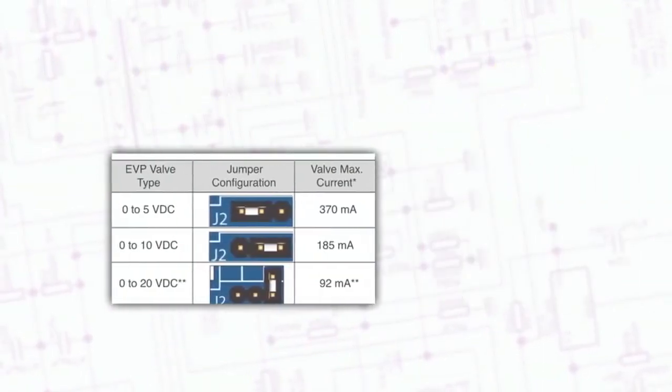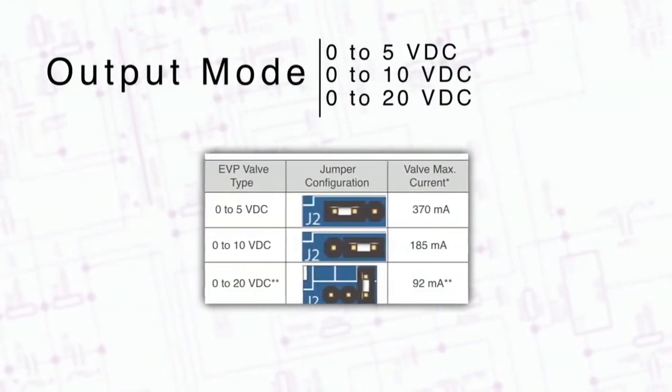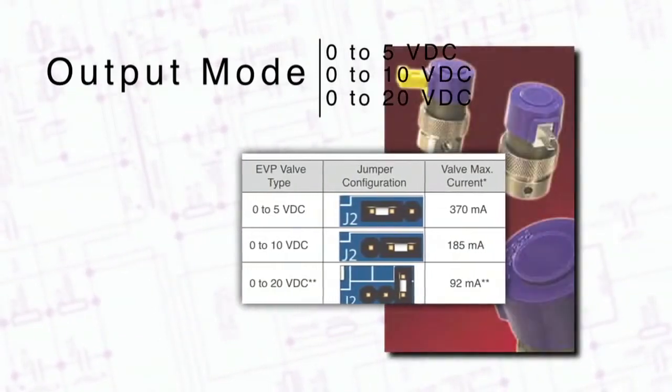There are three jumper selectable output modes for the standard Clipper EVP voltages: 0-5V, 0-10V, and 0-20V.